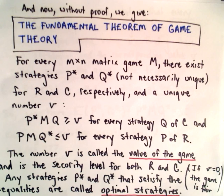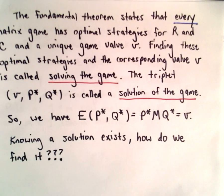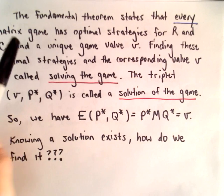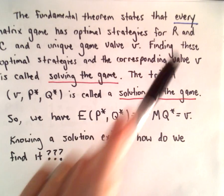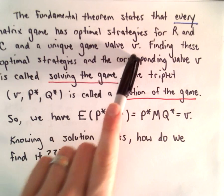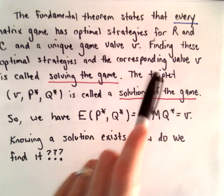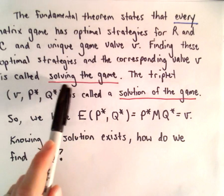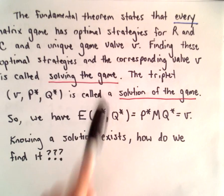So a couple other remarks here. First off, what do these two inequalities say? It says the fundamental theorem states that for every matrix game, there's optimal strategies for the row player and the column player, and a unique value V. You know, finding these optimal strategies and that corresponding value V, we say once we've done that, we've solved the game, or that's solving the game.